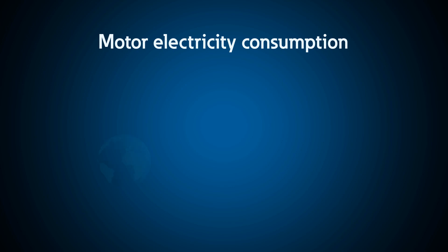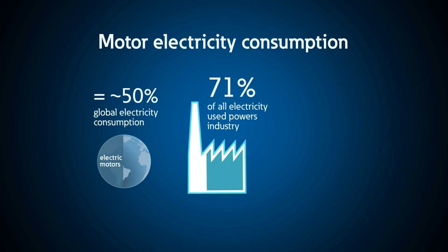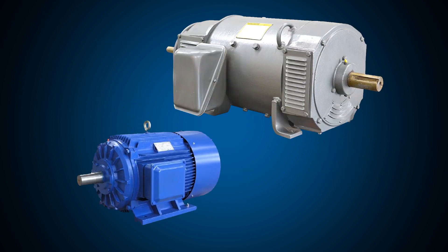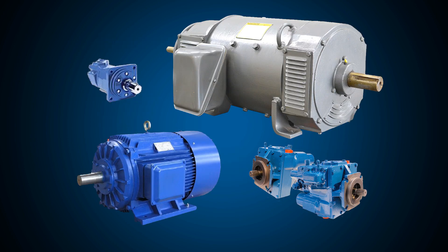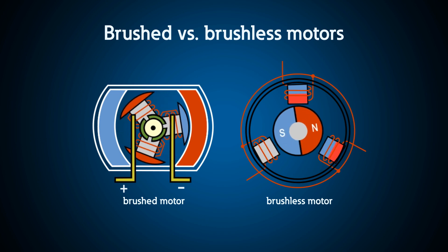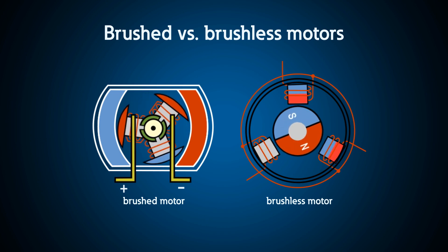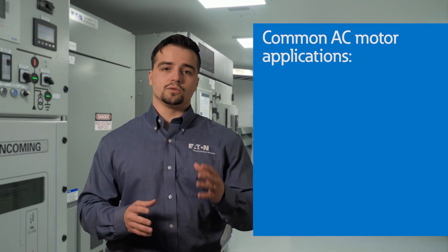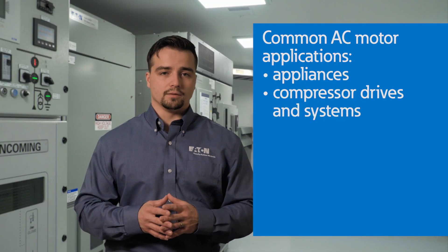In this video, I'm going to explain how motors work. Electric motors consume around half of global electricity. They are responsible for about 70% of industrial power consumption. There are different types of motors used in AC and DC power systems. DC brushless motors are very popular for use in electric vehicles because of their high torque and efficiency. AC motors use alternating current and are much more common.